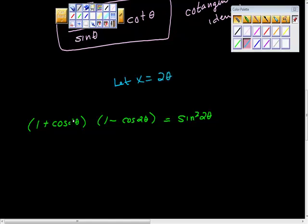Let x equal 2θ. And then I'm going to go back here. And every place I found 2θ, I'm going to put in x, x, and x.